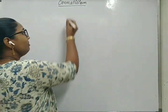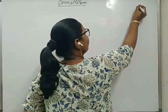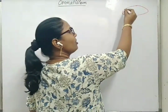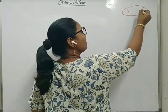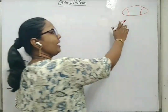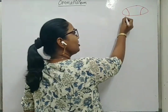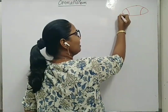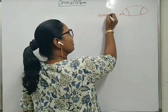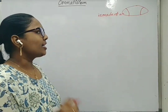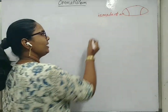Hello students. Now we will discuss about omatidium structure in cockroach. Let's suppose this is the head of cockroach. Cockroach will be having compound eyes on either side — on the lateral side of the head there will be compound eyes. Each compound eye is made of nearly 2000 functional units called omatidium.